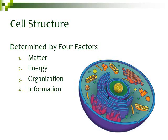We're going to be looking at parts of the cell that are used in energy. Number 3 is organization. Cells are actually very organized and have very specific parts, so the majority of this chapter is going to be looking at the different parts of the cell and what those parts do. The fourth factor is information — all cells need to hold genetic information, so pay attention to where this genetic information is actually stored in our cells.